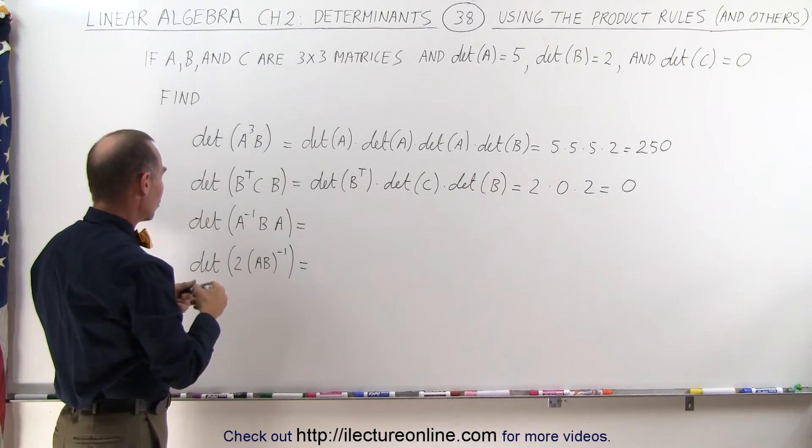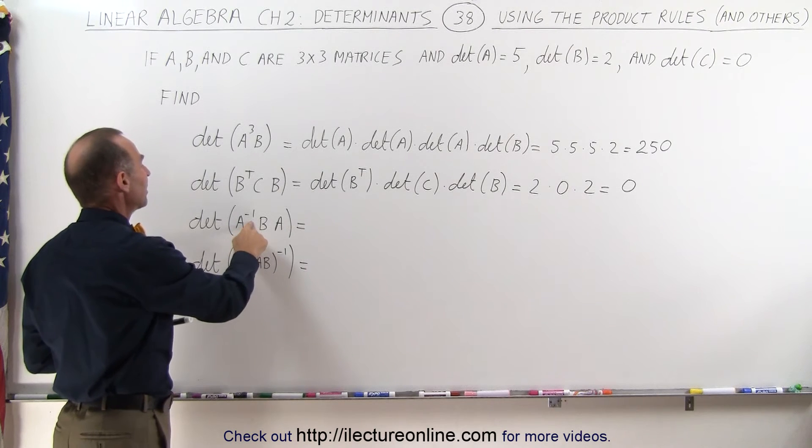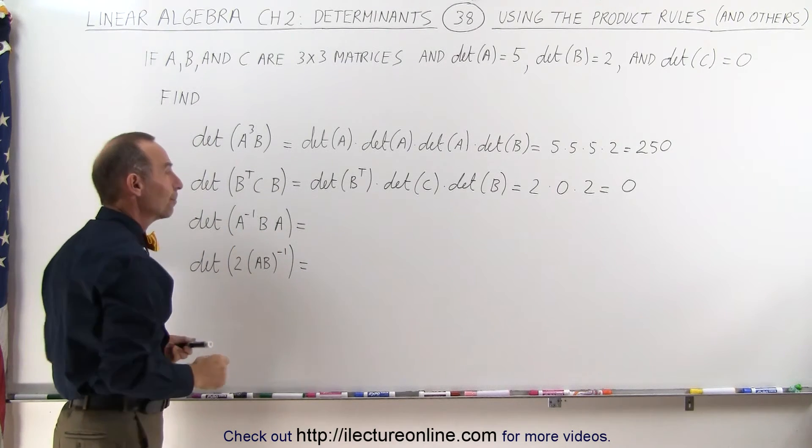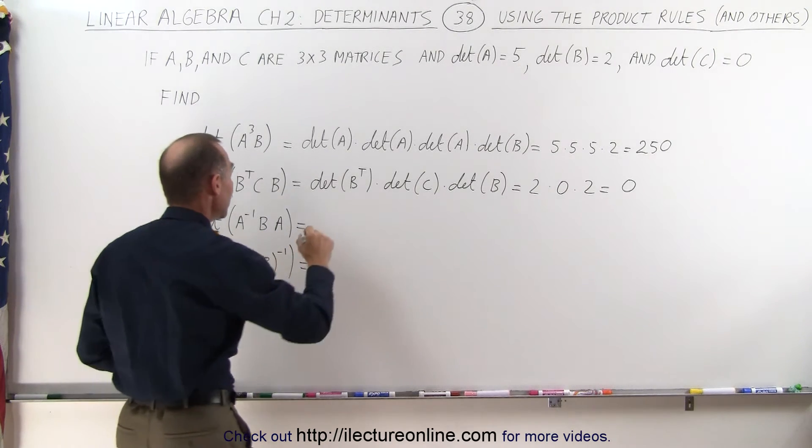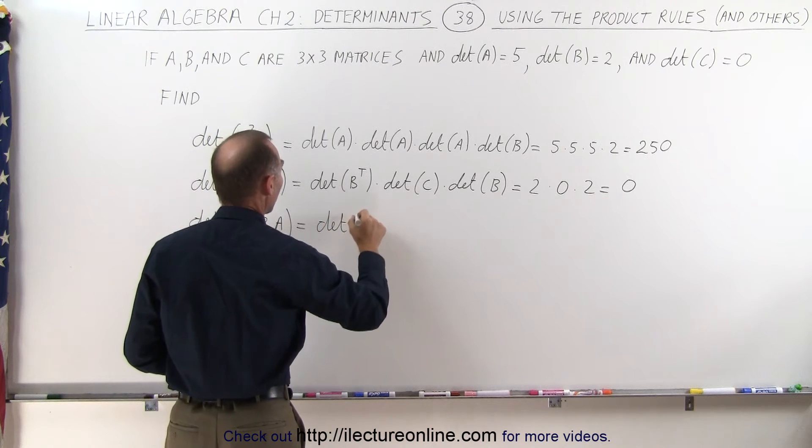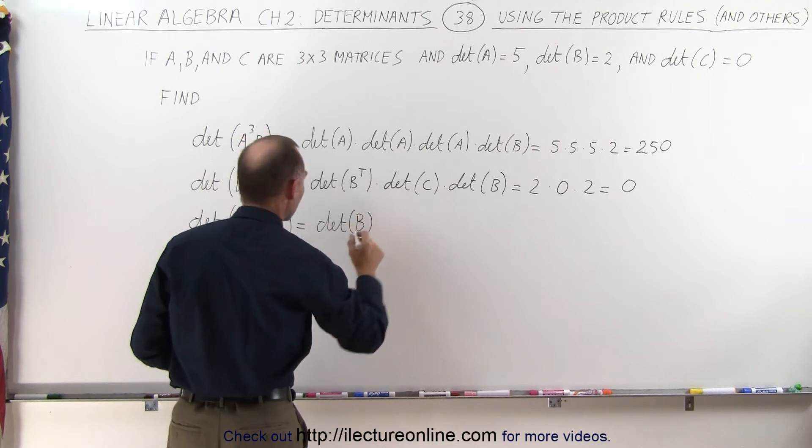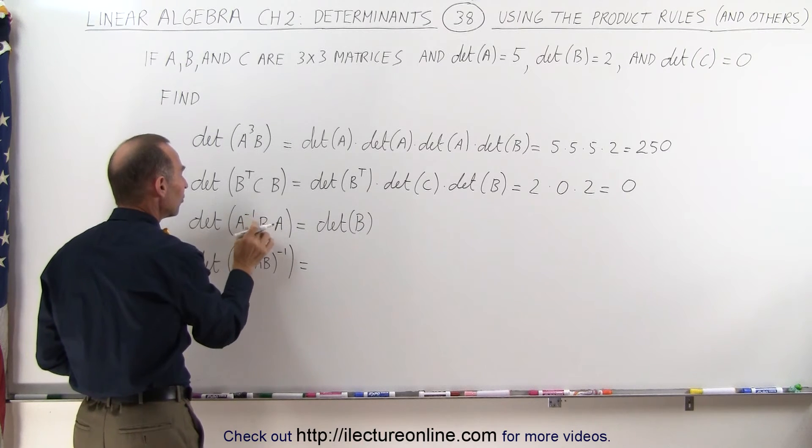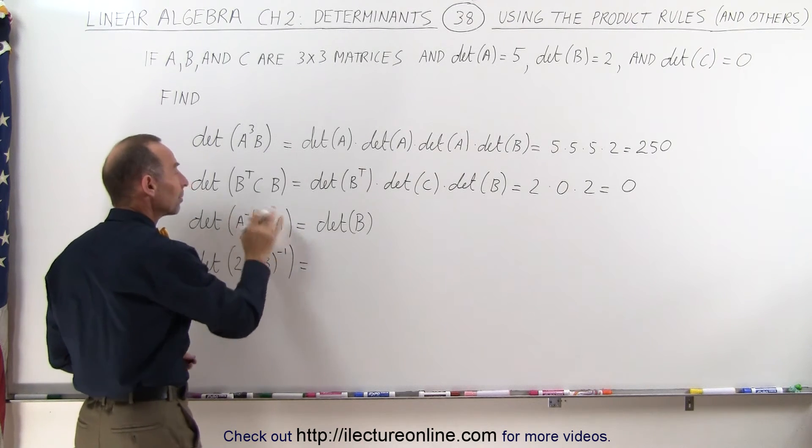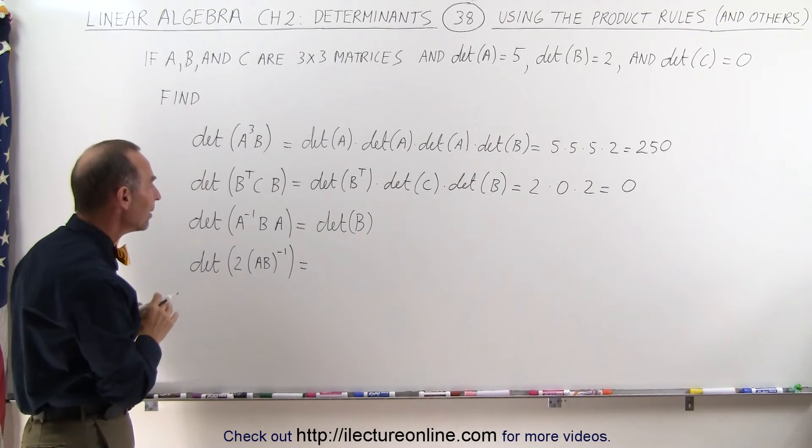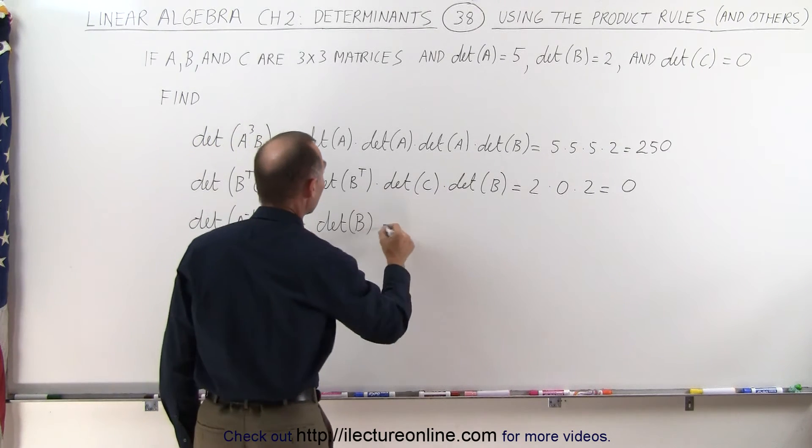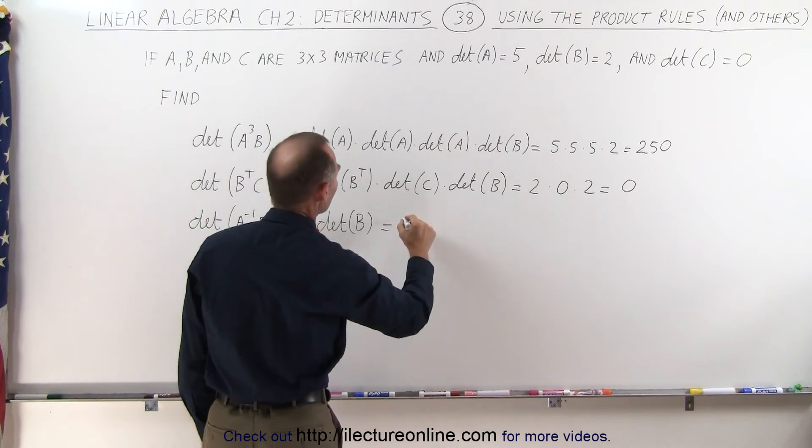Next one here, we have the determinant of the inverse of A times B times A. It turns out that is equal to the determinant of the matrix B alone. So we have the A inverse, B and an A, that will cancel out. This is like multiplying times the identity matrix, and so this is simply the determinant of B, which is equal to 2.